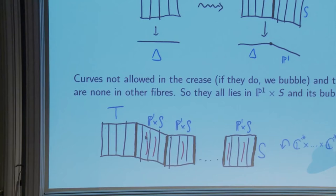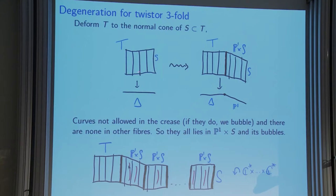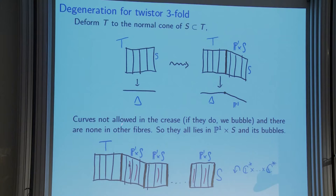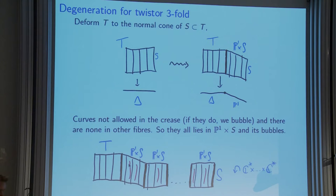We start with our twistor threefold — stable pairs all lie on the central fiber but possibly thickened out of it. We degenerate: replace this by its deformation to the normal cone. Take this guy, times it by C, blow up S in the central fiber, and end up with a new central fiber that looks like this — I've degenerated this to something where I've bubbled off a P1 × S. I'm forming the relative moduli space of curves in T relative to S; the curves can't lie in S, they must intersect S in a finite number of points, which here is zero because the fiber class dots S to zero.